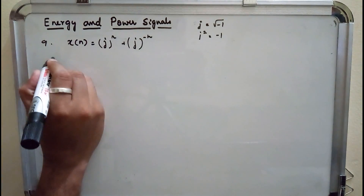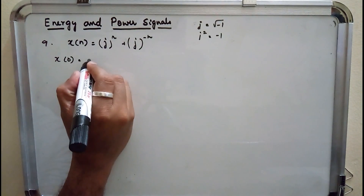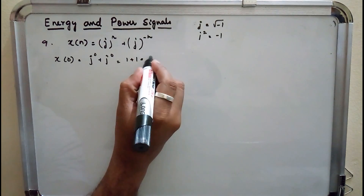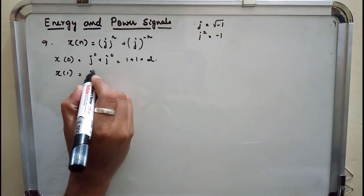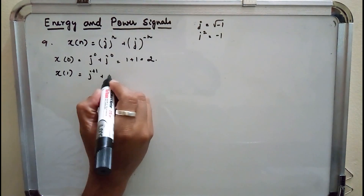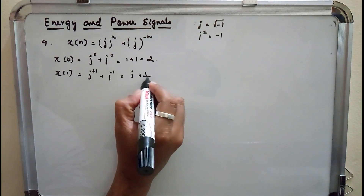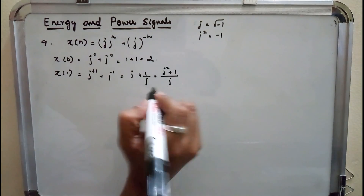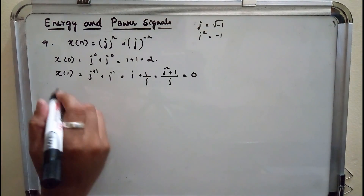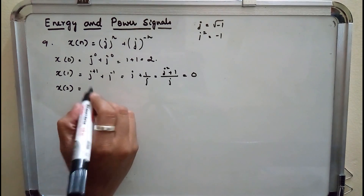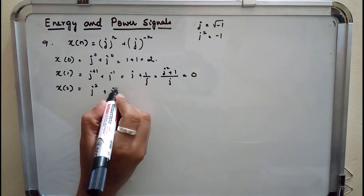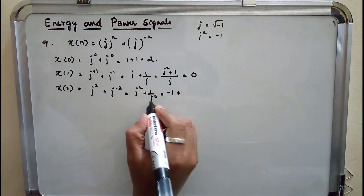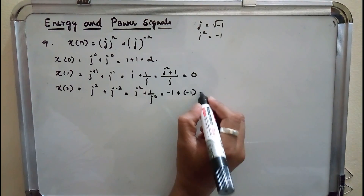Let me put in values for n. x(0) = j^0 + j^0 = 1 + 1 = 2. x(1) = j^1 + j^(-1) = j + 1/j. Taking common denominator j, we get (j² + 1)/j. Since j² = -1, the answer is 0. x(2) = j² + j^(-2) = -1 + 1/(-1) = -2.